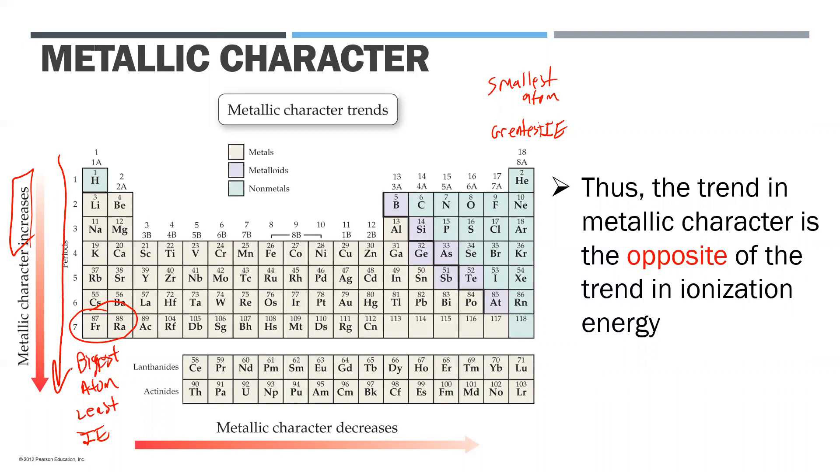Well, it makes sense because I get bigger - it's easier for me to lose that electron in my valence shell because it's further away. If it's easier for me to lose that electron, then I'm more metallic because metals like to lose electrons.